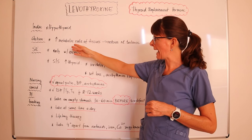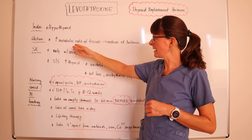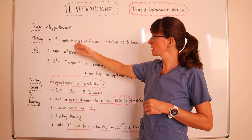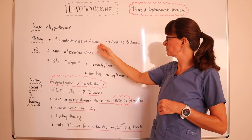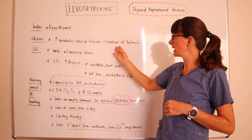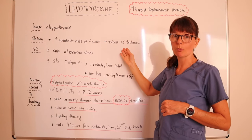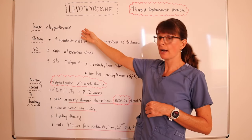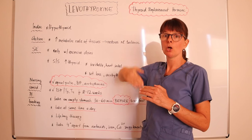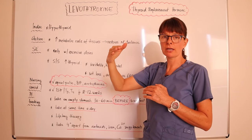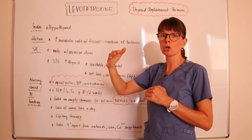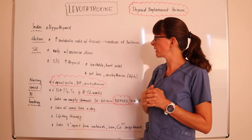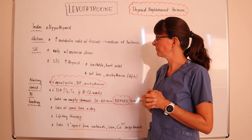The action of levothyroxine is that it increases the metabolic rate of tissues and restores normal balance. When we're treating hypothyroid, we're bringing the patient back up to a normal thyroid level.